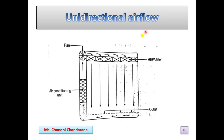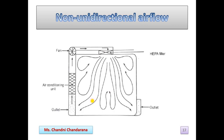In unidirectional air flow, the airflow is in one direction. There is an air conditioning unit, a fan, and a HEPA filter. Whatever air comes from the outlet, it goes into the air conditioning, then to the fan and HEPA filter, where it gets filtered and becomes unidirectional flow. In non-unidirectional air flow, the same components are present — outlet, air conditioning, fan, and HEPA filter — but the airflow is not in one direction, hence it is known as non-unidirectional air flow.